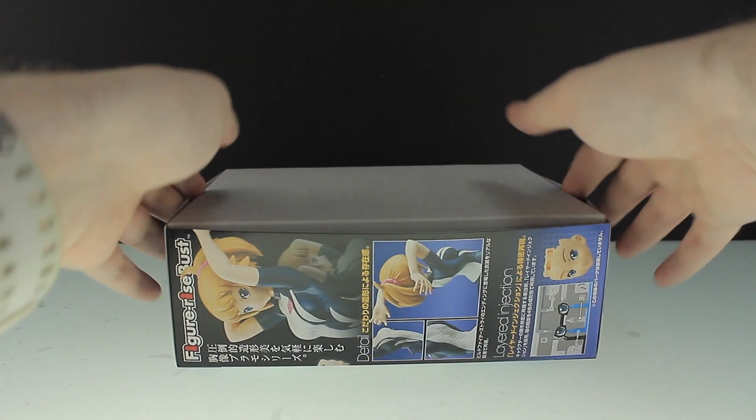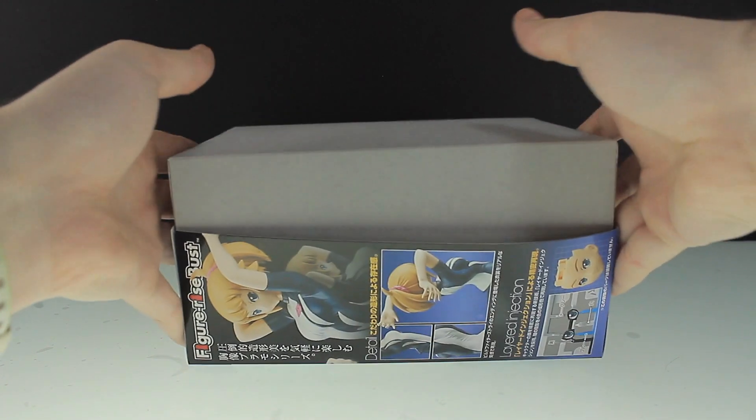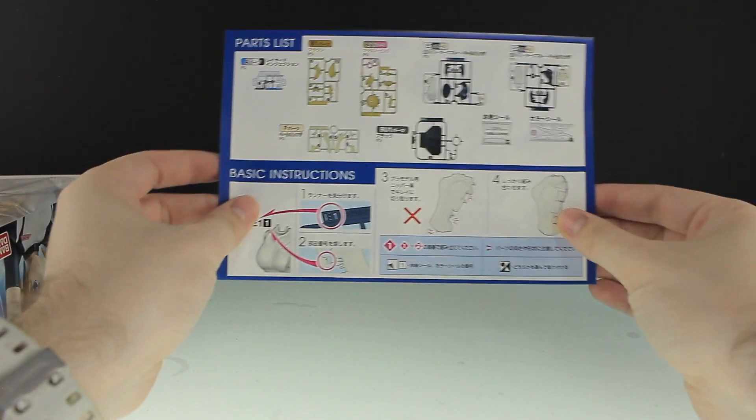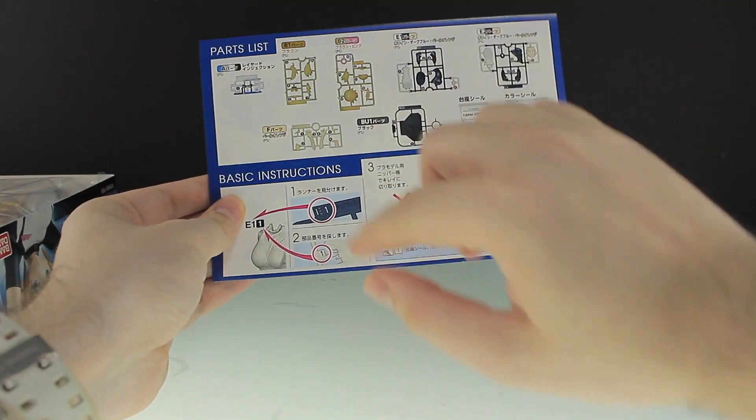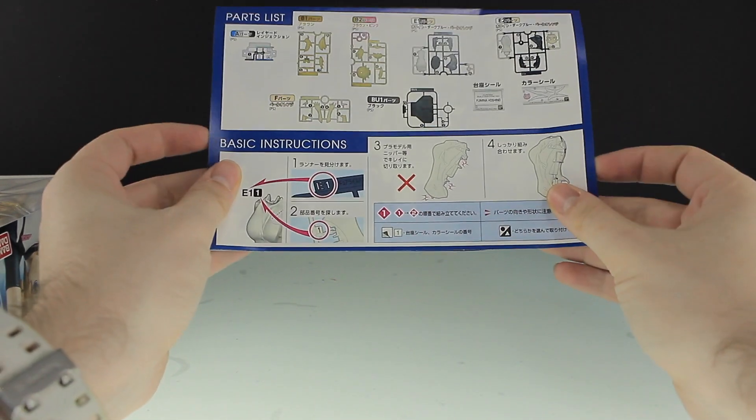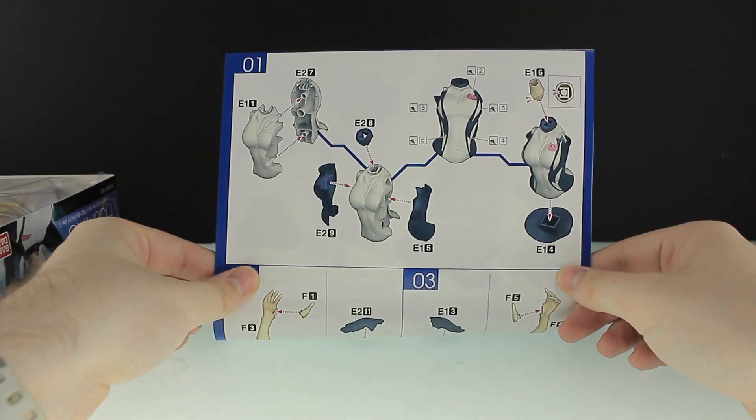Get this tape out of the way. If this is like Gunpla then the manual should be in the bottom, is it? Yes it is. Move the box out of the way for a second. There is the parts list, so we've got a grand total of seven runners and two sheets of stickers. Fold that out, there's the same pictures that are on the box.